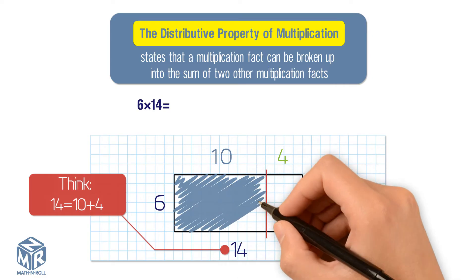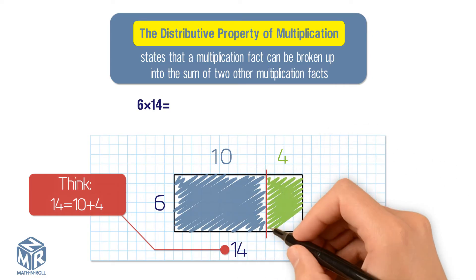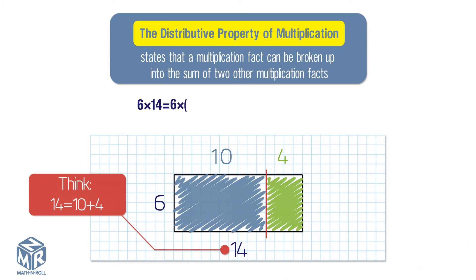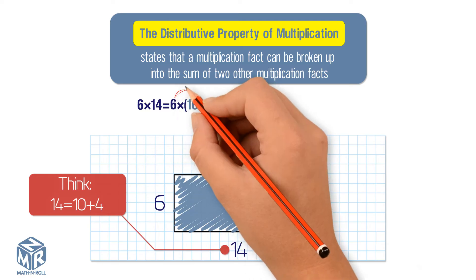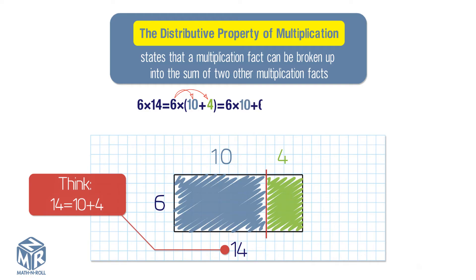Label and shade the smaller rectangles using two different colors. Use the distributive property. Find the product that each smaller rectangle represents. 6 times 10 equals 60. 6 times 4 equals 24.